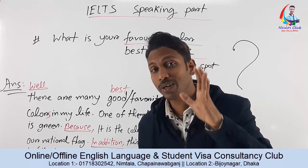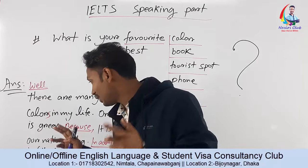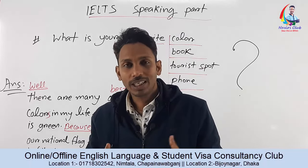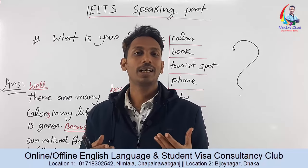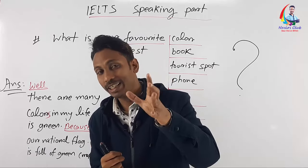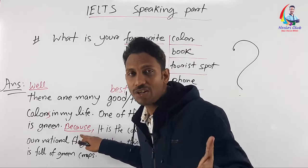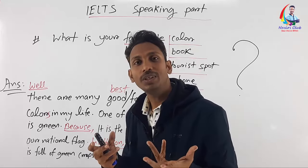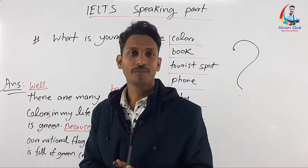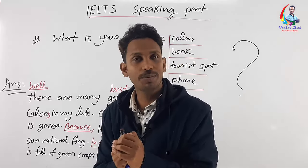Because our target is 7.5 or 8, we now need to add reasons using the word 'because.' We give the examiner additional information to show our language ability. For example: 'Because it is the color of our national flag.' We have to explain why green is our favorite.